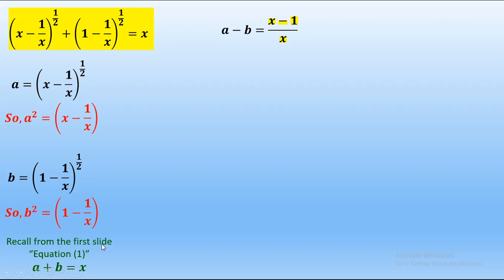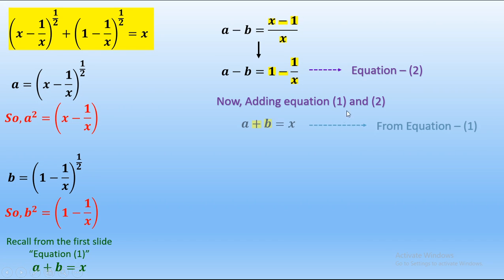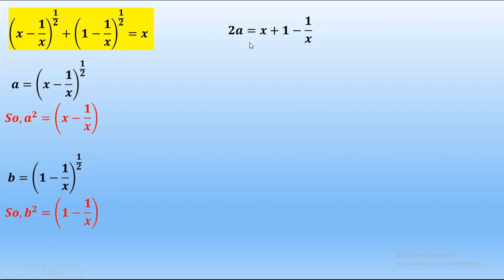From equation 1 we recall a plus b = x. The expression a minus b = (x minus 1)/x can be rewritten as a minus b = 1 minus 1/x. This is equation 2. Adding equation 1 and equation 2, the b terms cancel and we are left with 2a = x plus 1 minus 1/x. Simplifying, 2a = x minus 1/x plus 1.